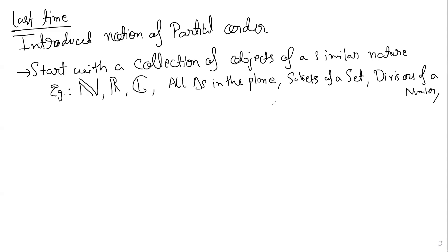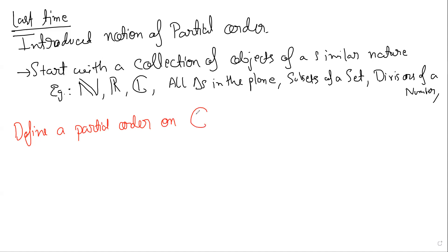One more example — divisors of a number. We already know these examples and we kind of put some orders on them. Now, before we go further, can anyone define a partial order on the complex numbers? We want to put a relation on the complex numbers which is an order relation — meaning it's transitive, reflexive, and antisymmetric. Let's try to define a partial order on complex numbers.